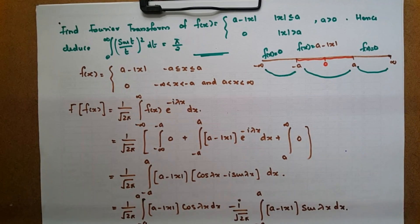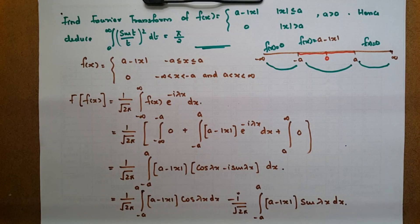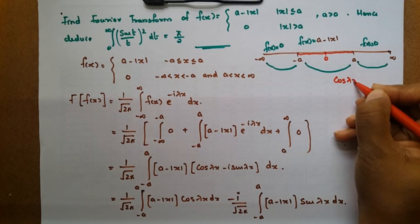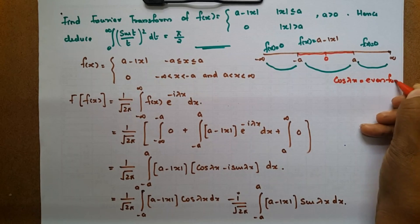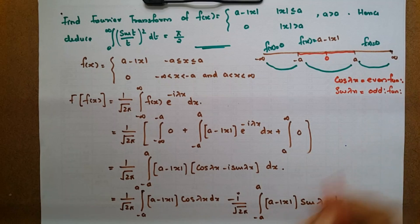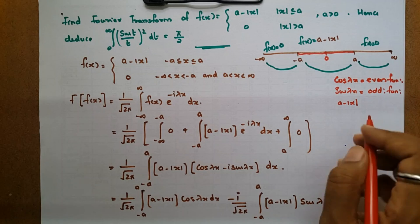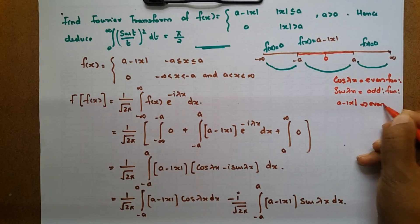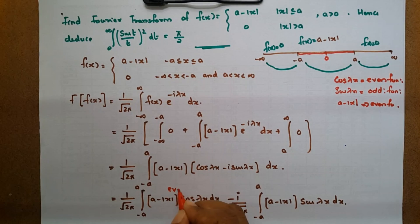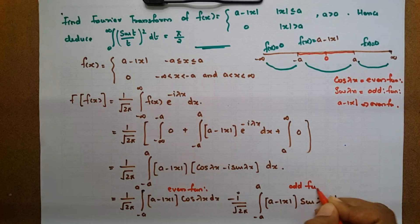Now (a - |x|) is an even function, cos λx is an even function, so their product is even. sin λx is an odd function, so (a - |x|) times sin λx is an odd function. The integral of an odd function over a symmetric interval is zero. So the sin term vanishes.